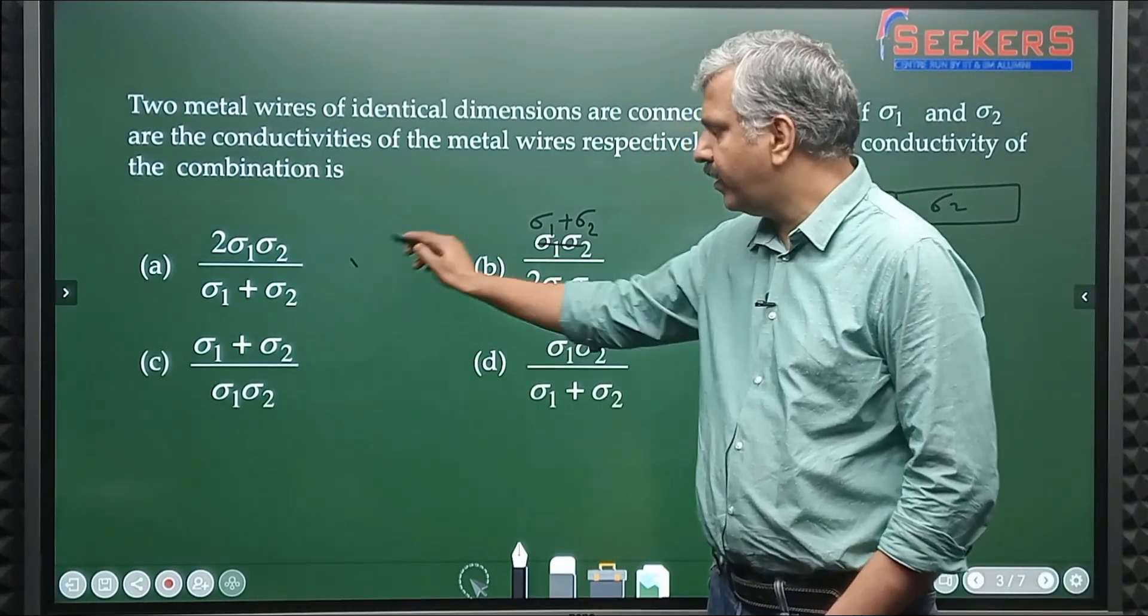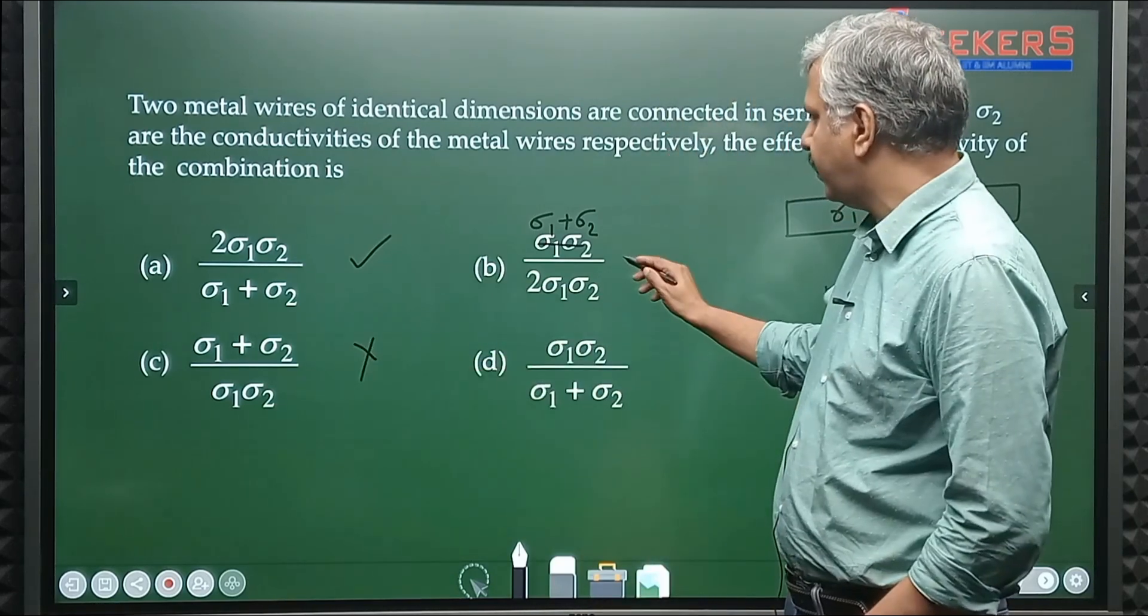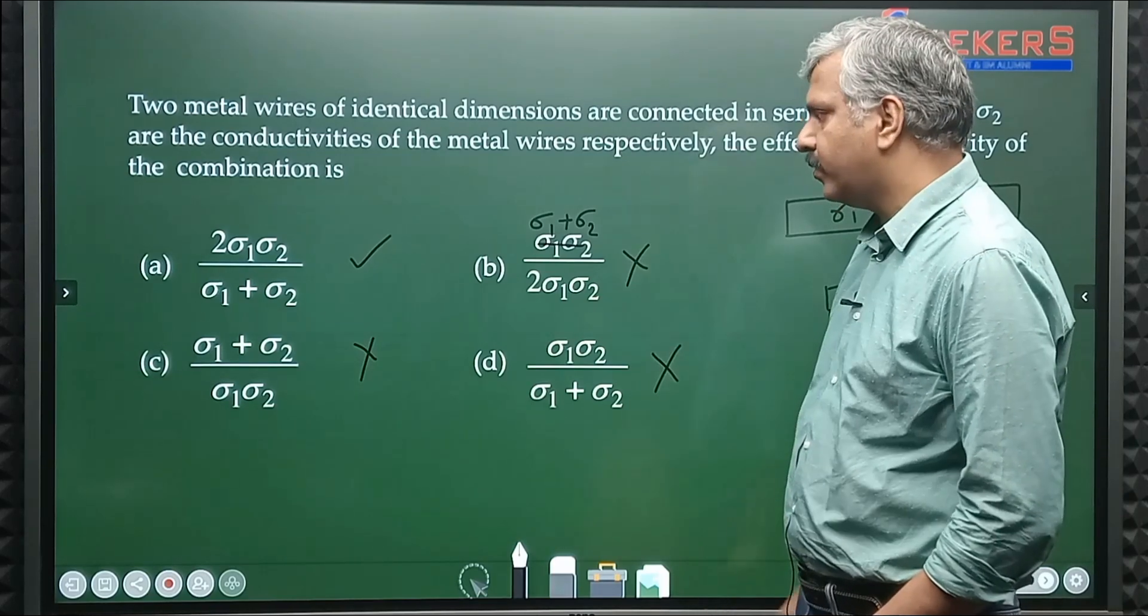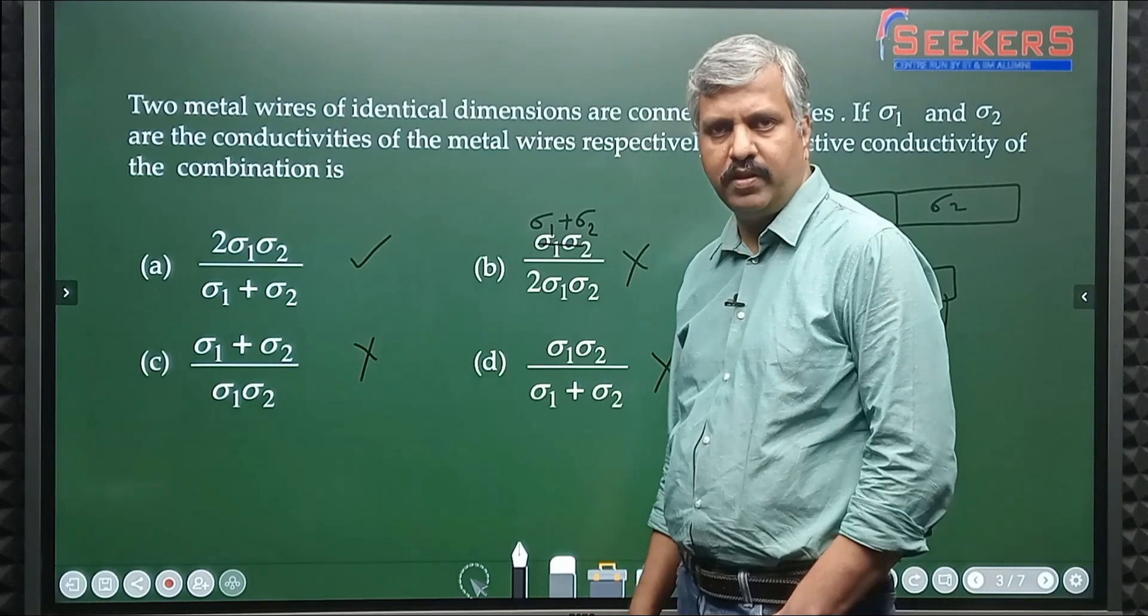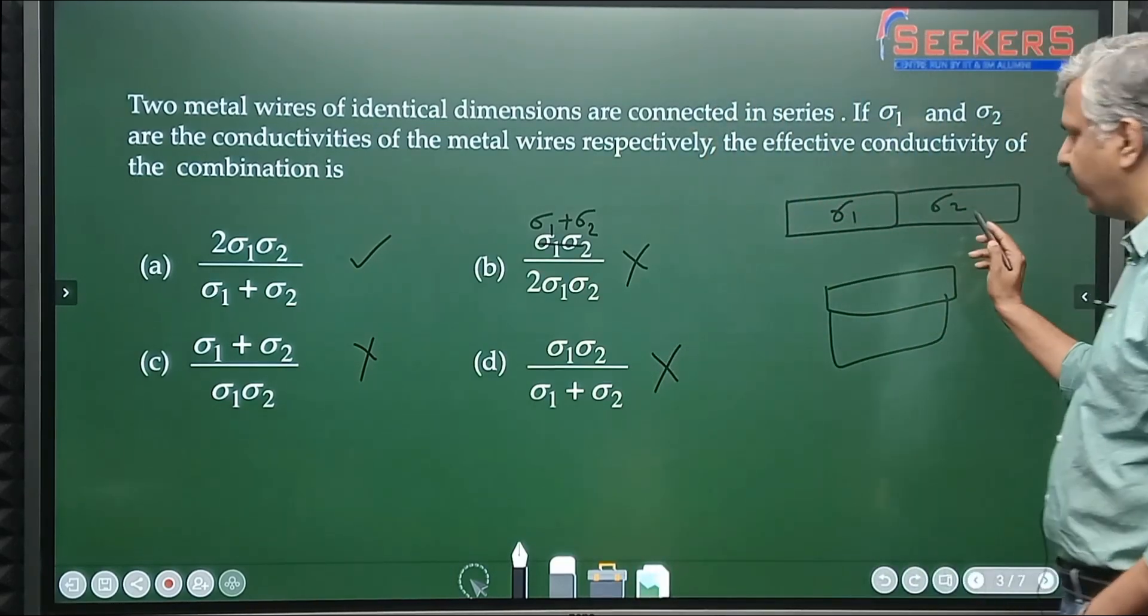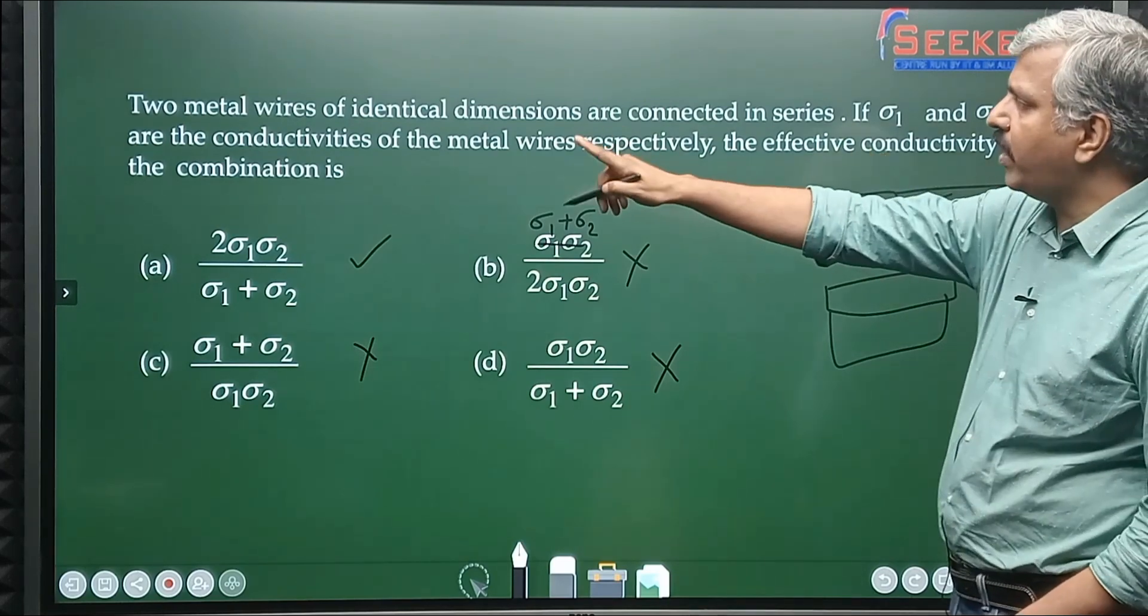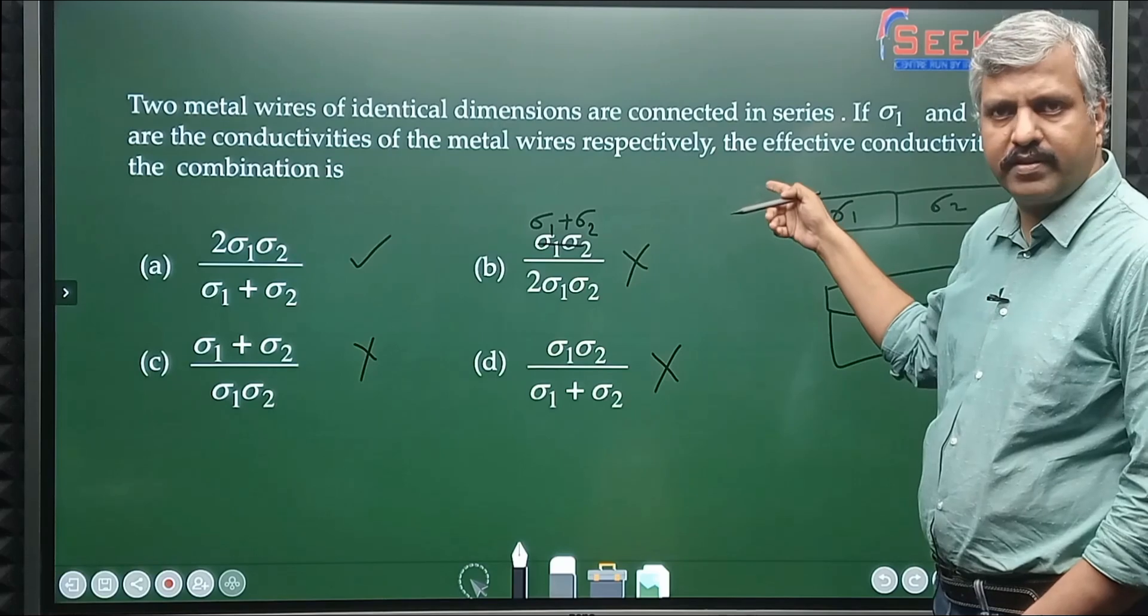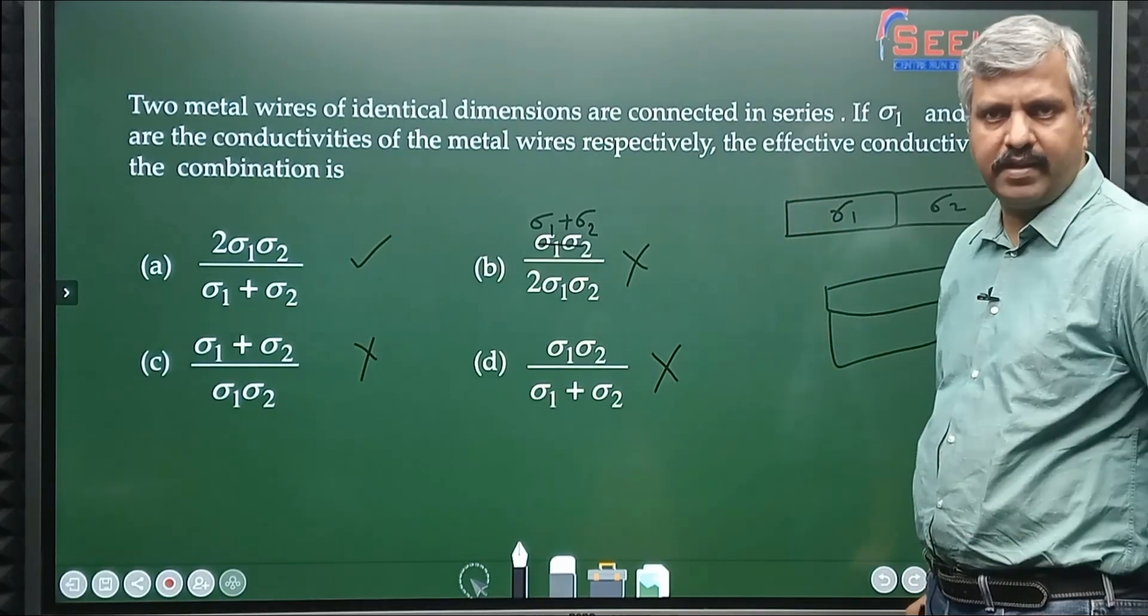If I substitute here I will get the answer, if I substitute here I won't get the answer, if I substitute here I won't get it, if I substitute here also I won't get it. So only option A can be the only option. If σ1 was equal to σ2, this is same one material, so it is like one wire having conductivity σ1, what is its conductivity?